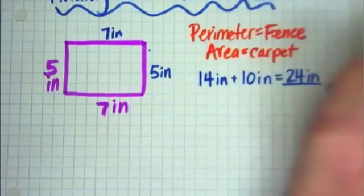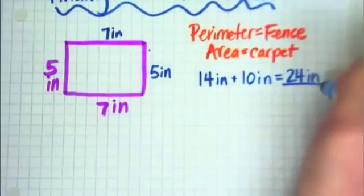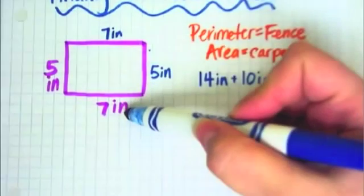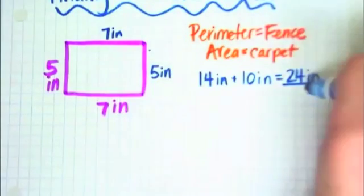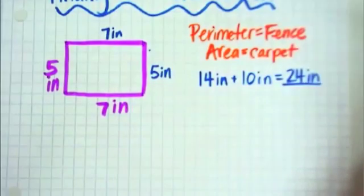Now very important, don't forget the unit. And the unit is just pulled right from here. If there is no unit on your rectangle, you can just write 24 units. But in this case, we know it's inches.